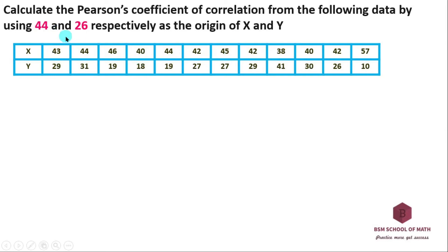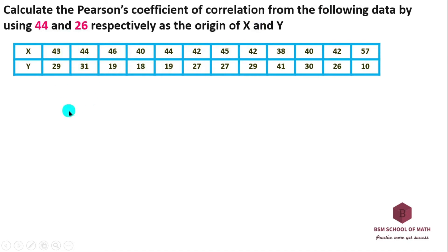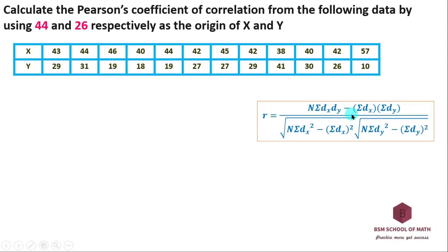If you have a different value in your question, you can write 46 or 42. If you write 19 or 27, you can write that deviation with that value. This is the actual mean method — if you write the mean, you can substitute that value. This is the formula.